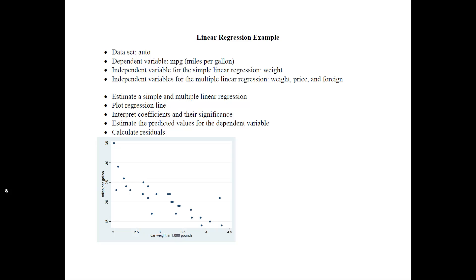This video follows a very commonly used dataset called Auto from several regression packages. We will estimate the regression model with the dependent variable mpg, or miles per gallon. For the simple linear regression we will use car weight, and the independent variables for the multiple regression would be weight, price, and foreign — whether or not the car is foreign. We have data on about 26 observations and this is the model we will be estimating.